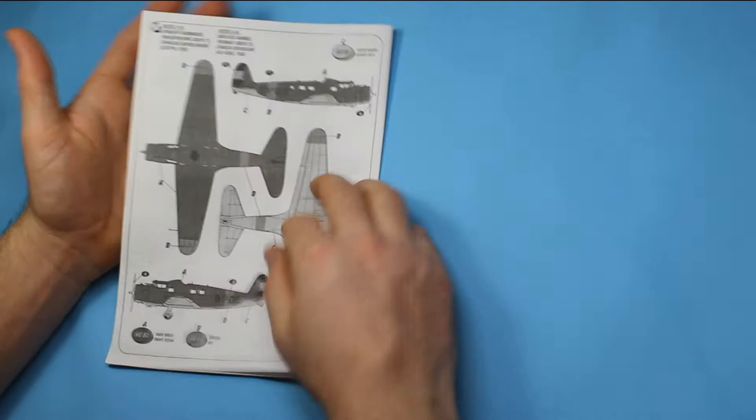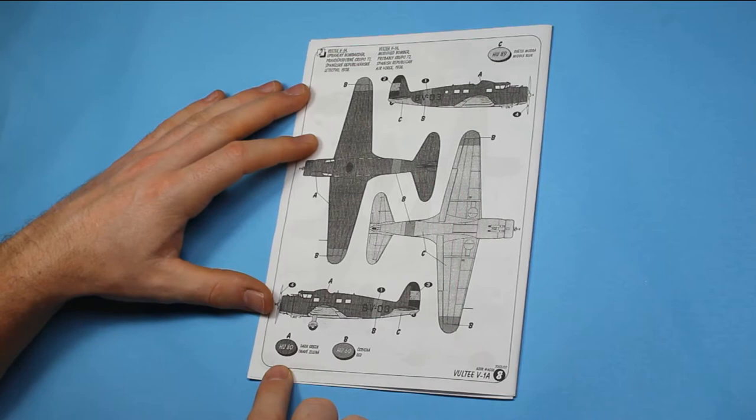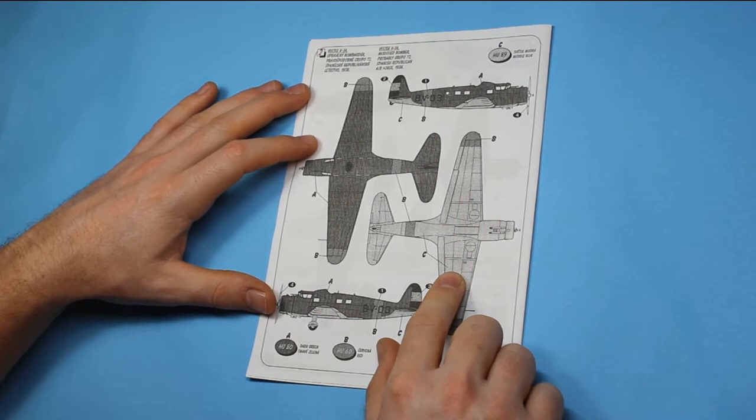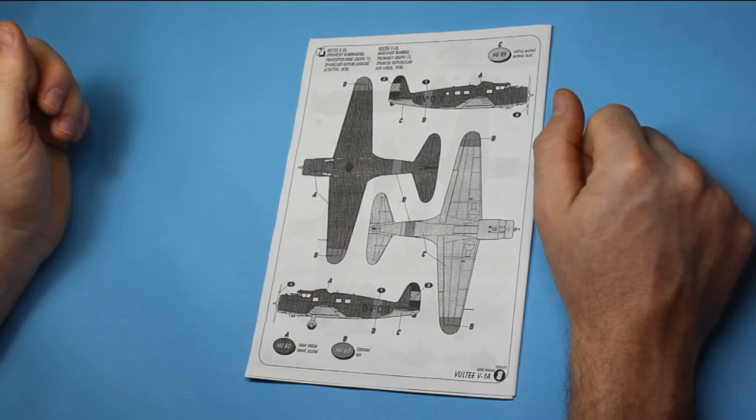Then over the other side there's a more general version which is just dark green if you don't fancy a camouflage with the red wingtips and the band around the fuselage and the blue on the underside and this is a modified bomber and it says here probably Grupo 72 of the Spanish Republican Air Force 1938.